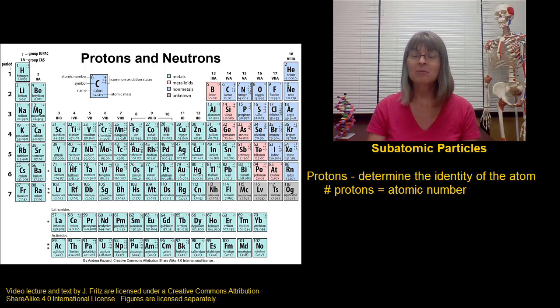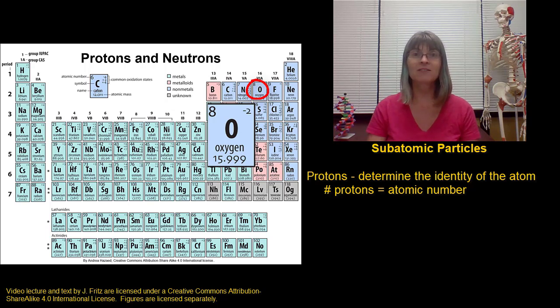Or if I have an atom of oxygen, if we look at the periodic table, we can see that oxygen has an atomic number of eight. So if I have an atom of oxygen, I know it has eight protons in it.